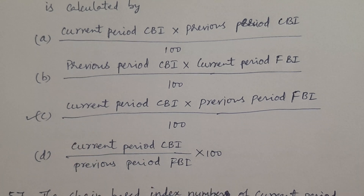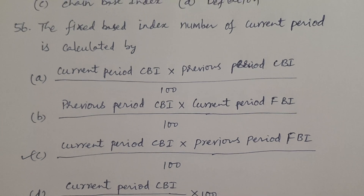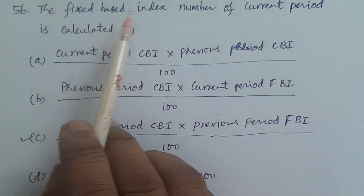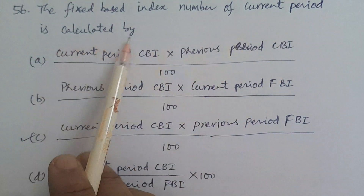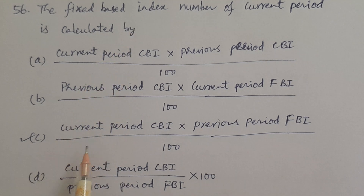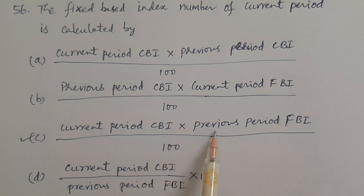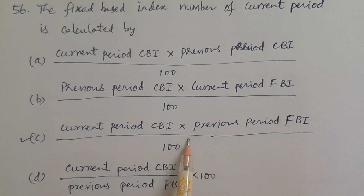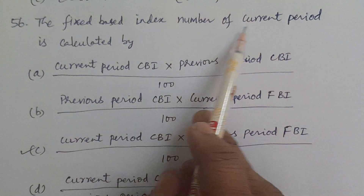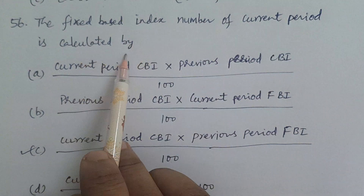The answer is C. The fixed base index number of the current period is calculated by: current period CBI into previous period FBI divided by 100. In Telugu, the fixed base index number of the current period is calculated by the current period's fixed base index number.